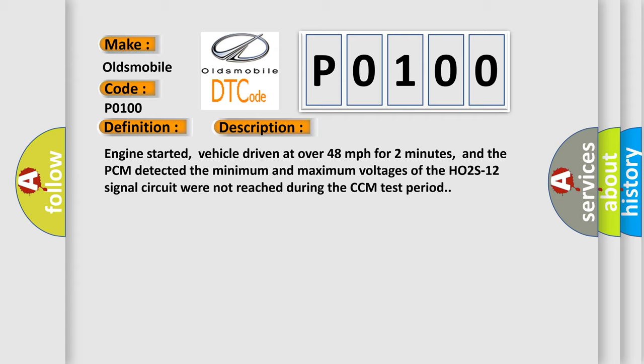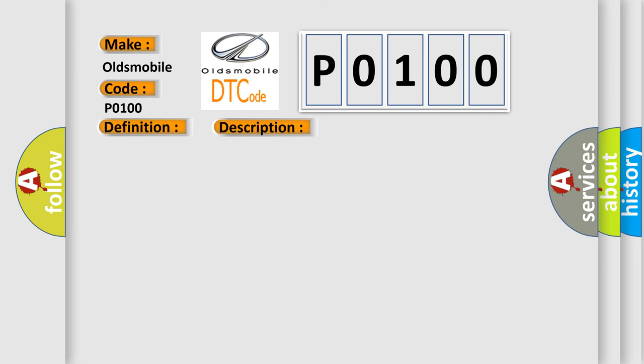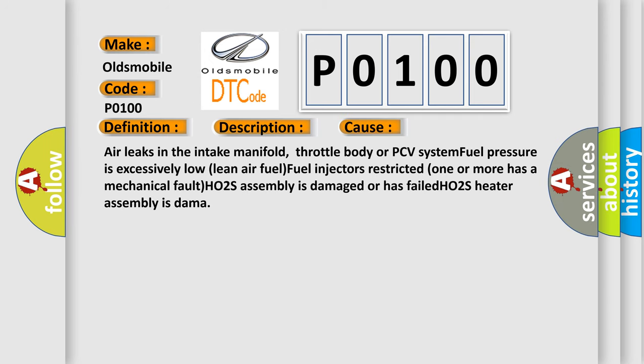This diagnostic error occurs most often in these cases: air leaks in the intake manifold, throttle body, or PCV system; fuel pressure is excessively low; lean air-fuel mixture; fuel injectors restricted; one or more injectors has a mechanical fault; or the HO2S assembly is damaged or has failed, including the HO2S heater assembly.